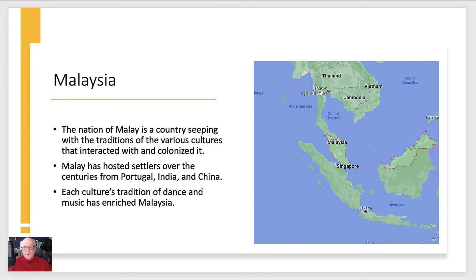Let's begin with Malaysia. Malaysia is the nation of Malay — a country steeped in the traditions of various cultures that interacted with it and colonized it. It's right next to Singapore, near the Gulf of Thailand, the Java Sea, and the South China Sea — a very important trade area in Southeast Asia. They hosted settlers for centuries from Portugal, from India, and from China, making it a very strong mixture of many different cultures.